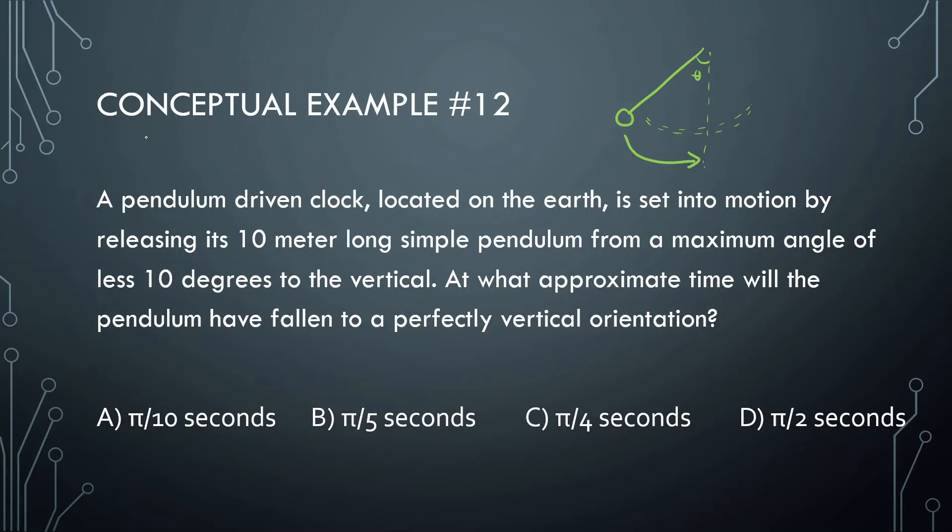But before we do that, let's try to figure out what the period is. So we know the period of a pendulum is equal to 2π times square root of the length, which is 10, divided by gravity, which is also 10. So I can see that the period is equal to 2π.